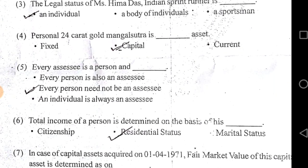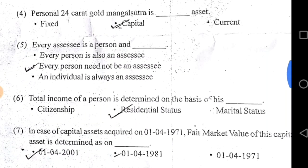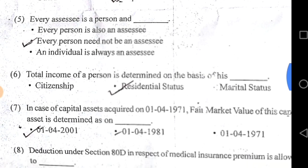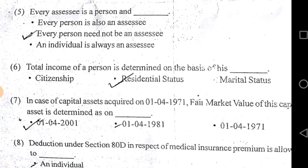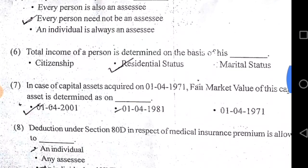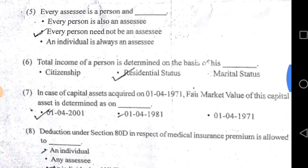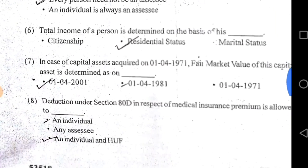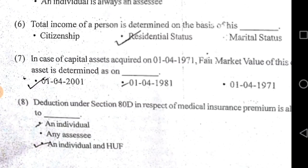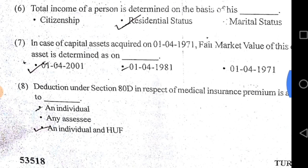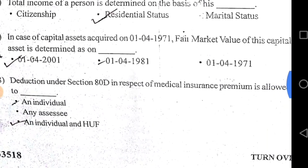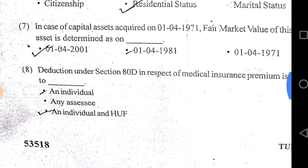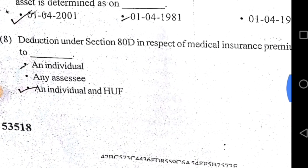Every assessee is a person, and every person need not be an assessee. Total income of a person is determined on the basis of his residential status. In case of capital assets acquired on 1st April 1971, the fair market value of the capital asset is determined as on 1st April 2001. Deduction under Section 80D in respect of medical insurance premium is allowed to individuals and HUF (Hindu Undivided Family).